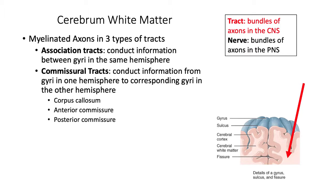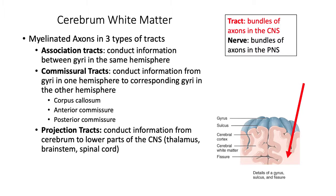Another example is the gray commissure of the spinal cord, where tracts cross from one side of the cord to the other. Projection tracts carry axons from the cerebrum to lower parts of the central nervous system, such as the thalamus, the brainstem, and the spinal cord.